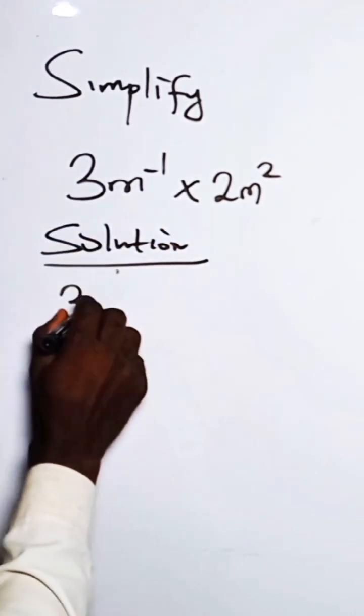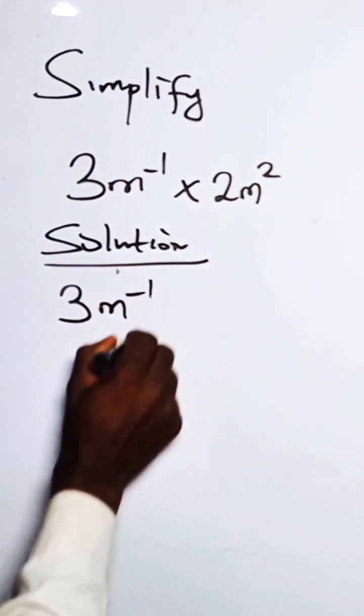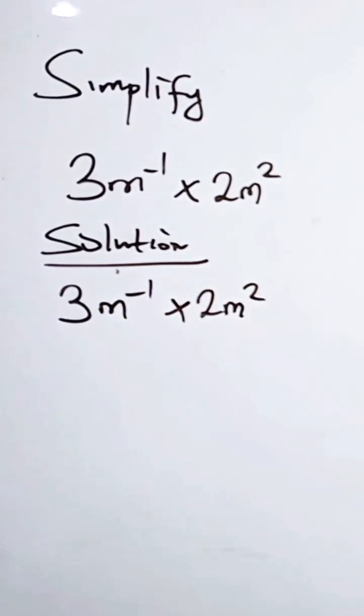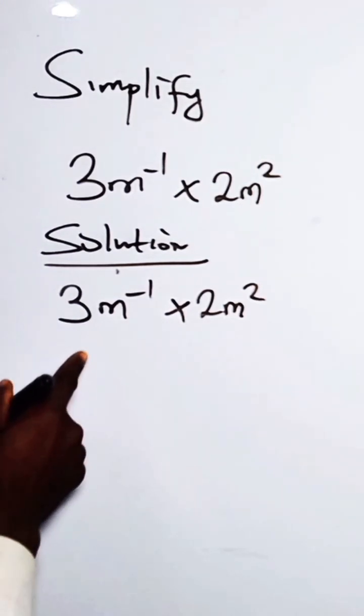So for 3 times m raised to the power minus 1, times 2 raised to the power m squared. So how do we do this?